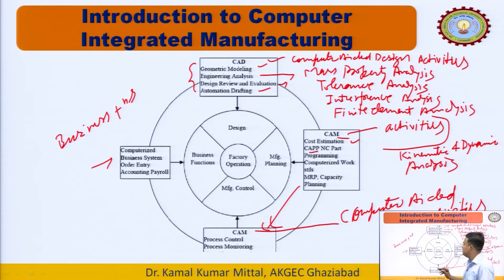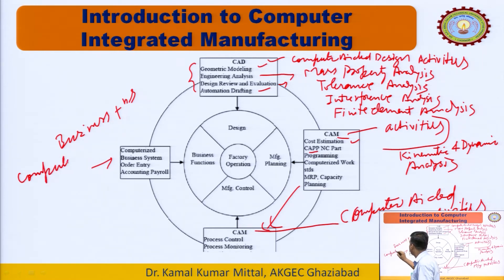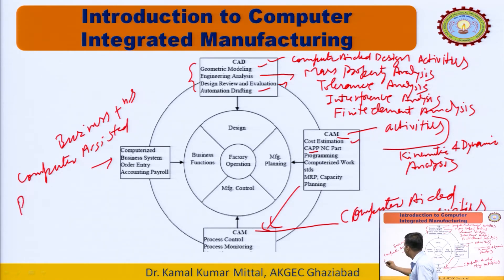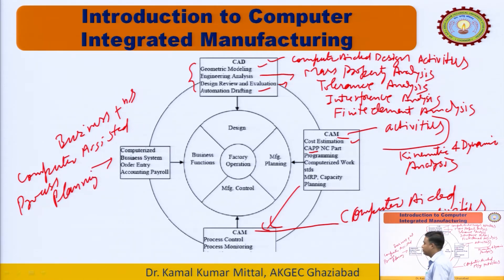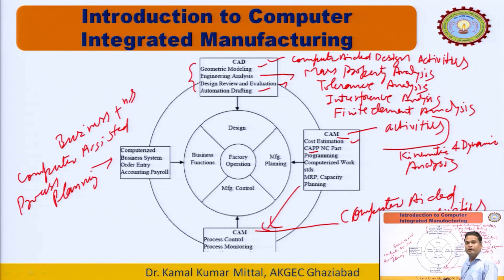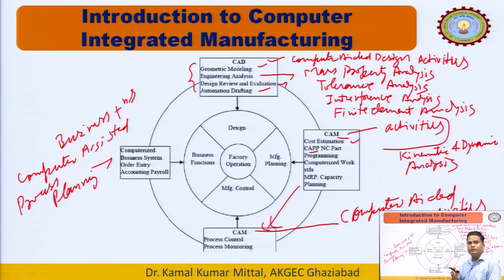Then comes CAPP — Computer Assisted Process Planning — which means creating a process plan with the help of a computer. By this, we can generate a route sheet. We provide the input parameters to the computer system or software, and a route sheet is generated by the computer using artificial intelligence.